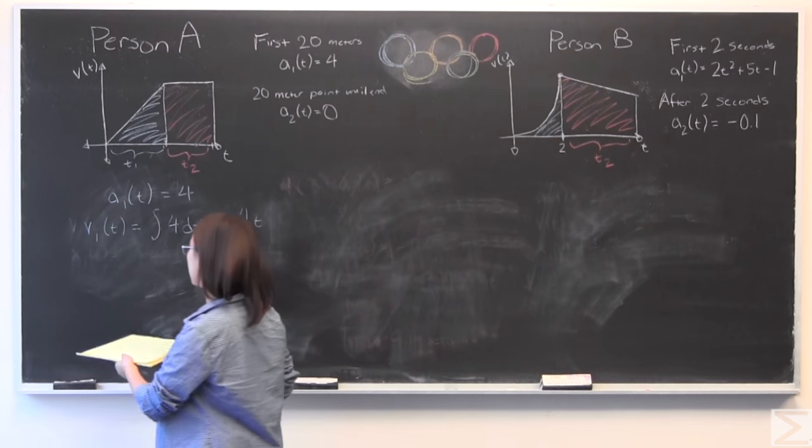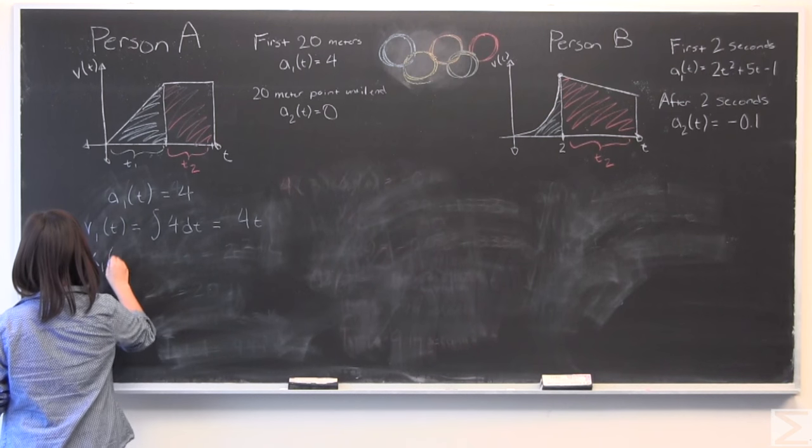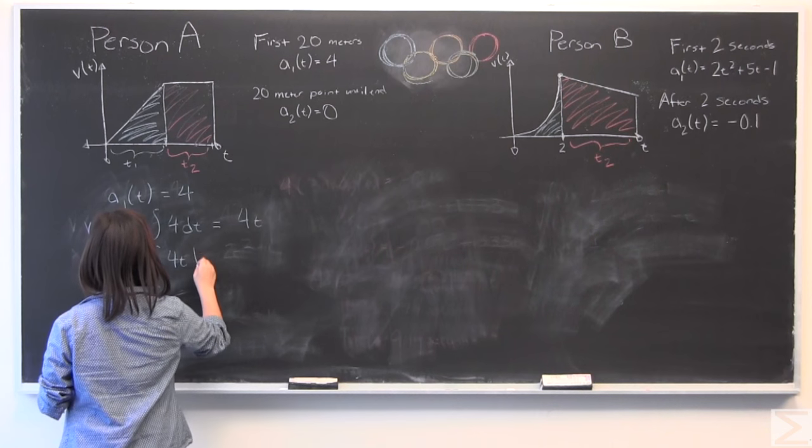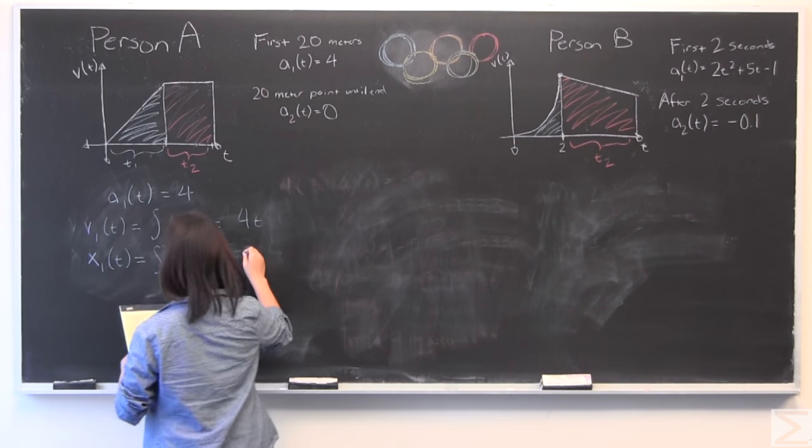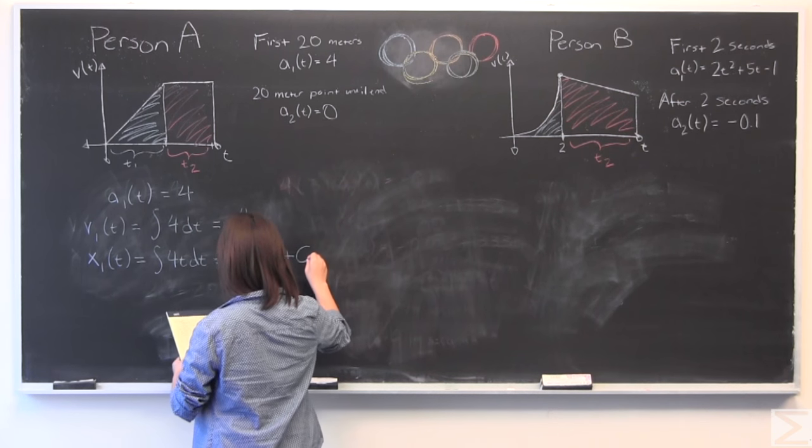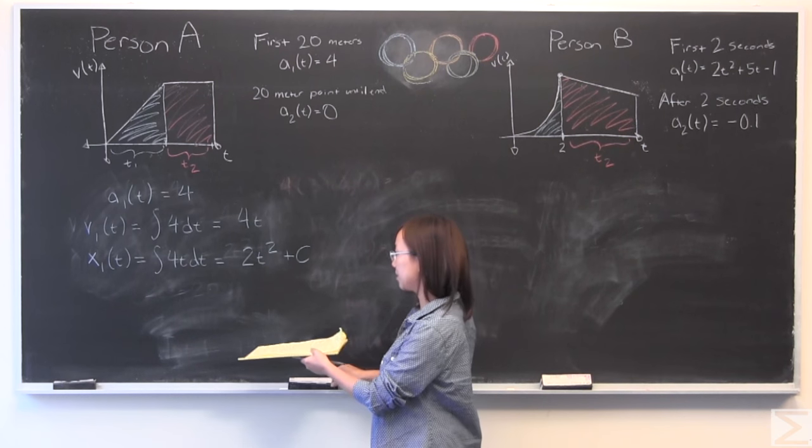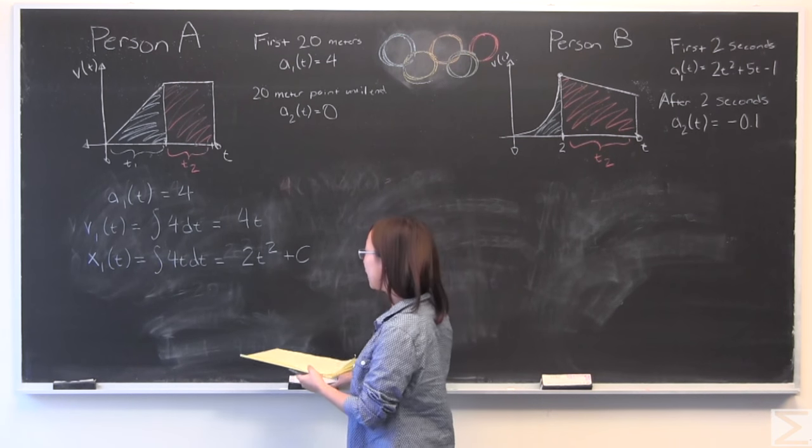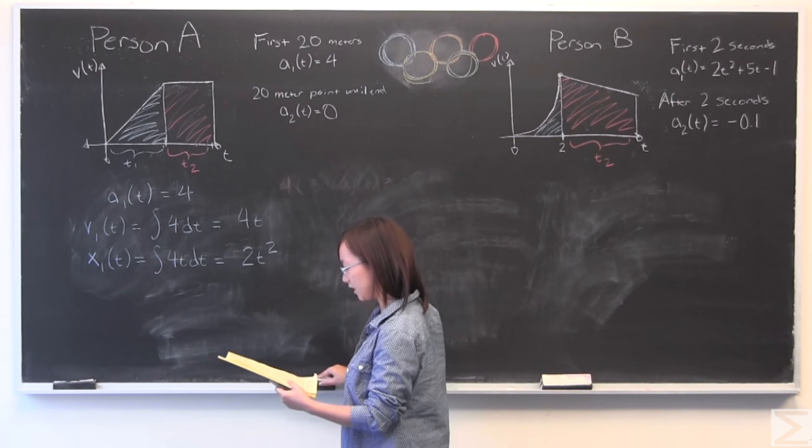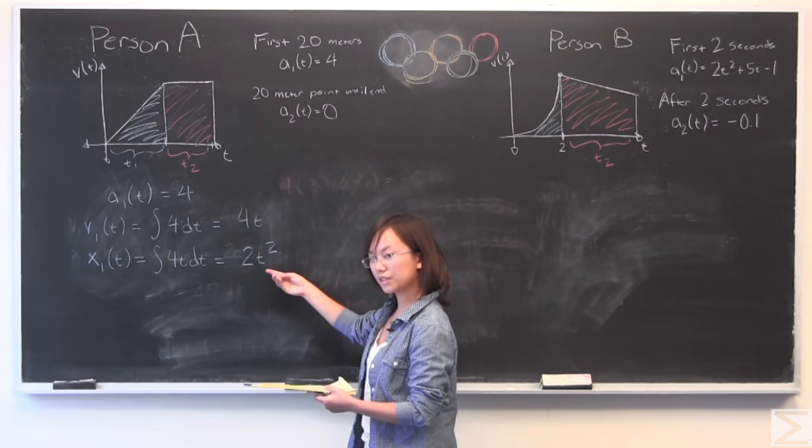So I'm going to integrate it again, because velocity integrated should give you position. And again, like I said earlier, initial position is zero, because you're at the Olympics, starting from a higher up point would be not legal. So I'm going to erase that again. And it's important to note that this happens for the first 20 meters.